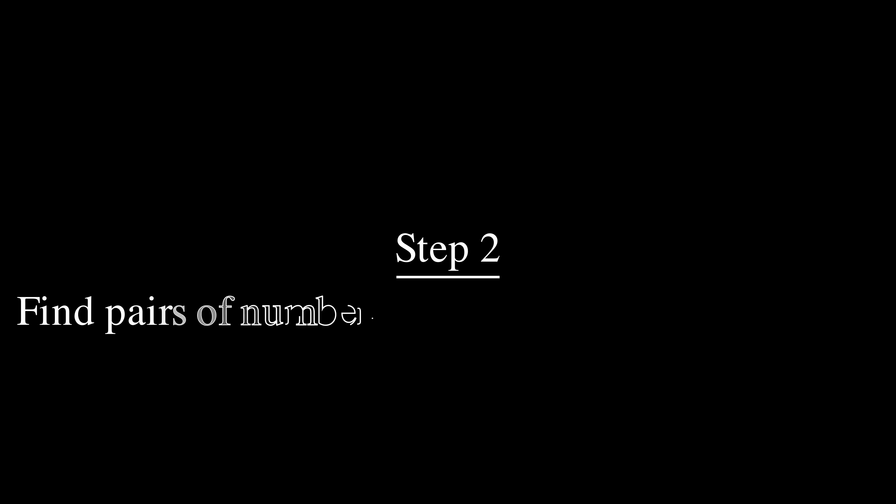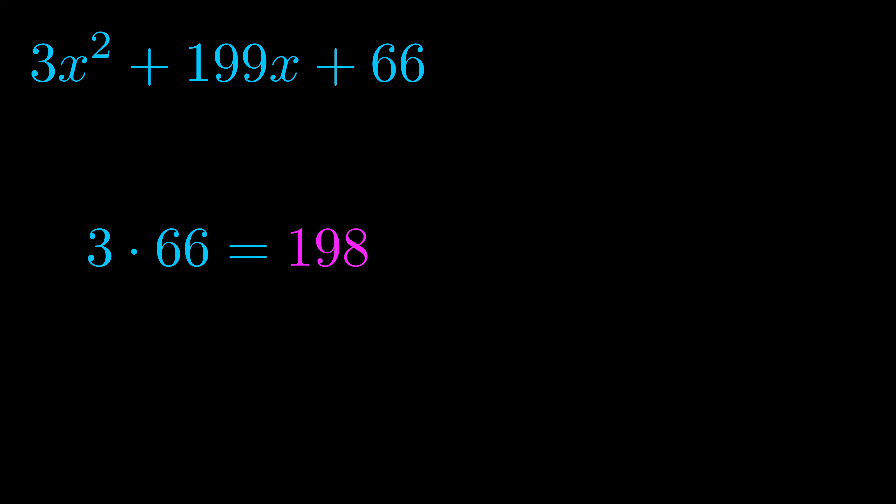Step two is to try to find all of the pairs which multiply to this number. Now it turns out you don't really need to find all of them, but go ahead and write down as many numbers as you can that multiply to the magenta value for now.